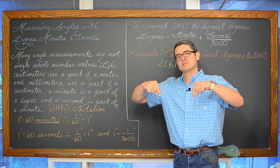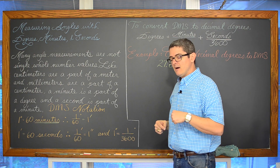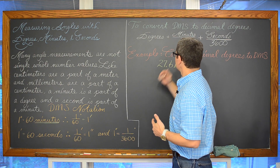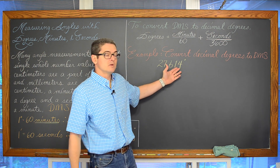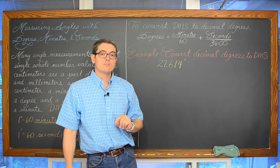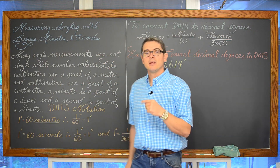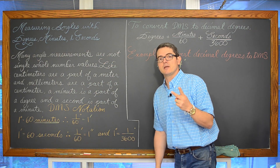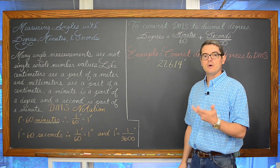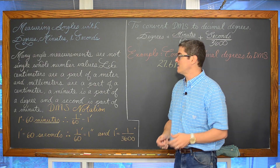We are going to have timestamps in this video's description letting you skip ahead. We are going to do one example where we convert from decimal degrees to DMS, one other example where we work the other way around — DMS to decimal degrees — and our last two examples are going to be addition and subtraction of angles when they are in this degree, minute, and second notation.